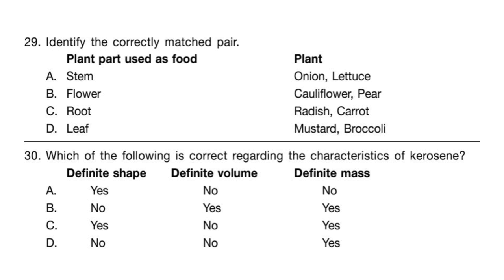Question 30. Which of the following is correct regarding the characteristics of kerosene? Kerosene does not have a definite shape but it has definite volume and definite mass. So the answer is Option B: no definite shape, yes definite volume, yes definite mass. This is the correct answer.